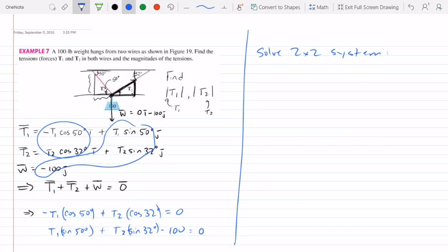And I'm going to do it the easy way and use a CAS like Wolfram Alpha. And when I plug in that system, I get that T1 is equal to 85.6 pounds and T2 is 64.9 pounds.